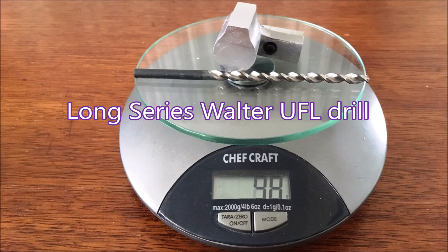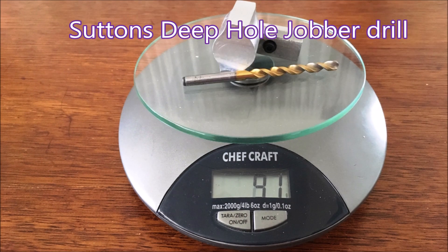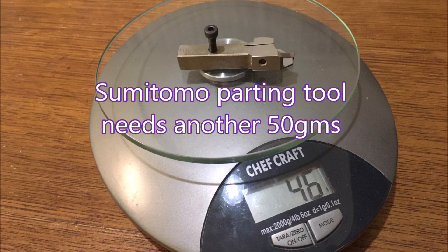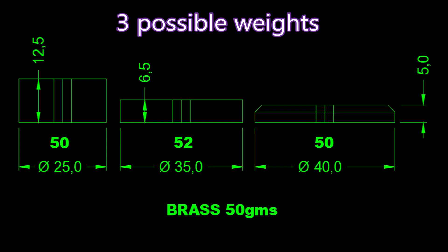So I decided to balance the tools that would go into the turret. Here are the drills - you can see they're at about the 91 to 98 sort of weight. And the parting tool is only 46 grams, so it needs another 50 grams added to it to get up there.